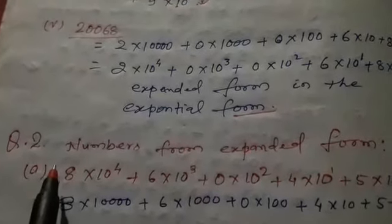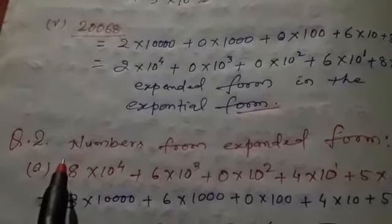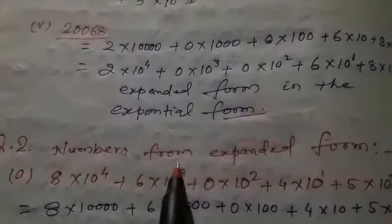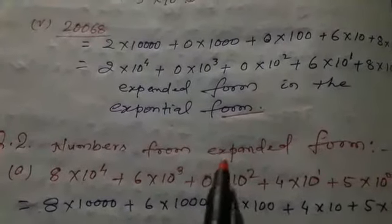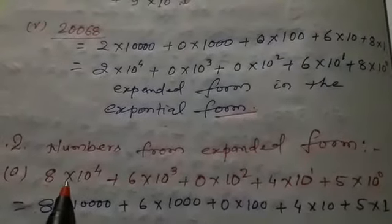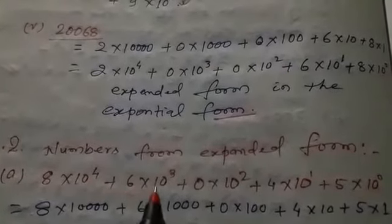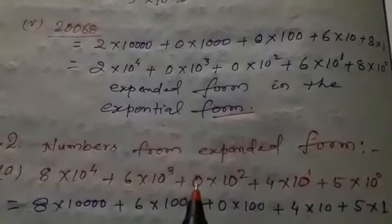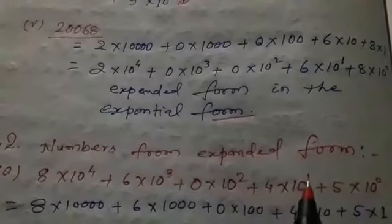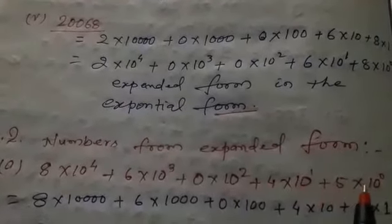Dear students, today I am going to solve Exercise 13.3. It is the second part of this exercise. Question number 2 is numbers from expanded form. The first is 8 × 10 to the power 4 plus 6 × 10 to the power 3 plus 0 × 10 squared plus 4 × 10 to the power 1 plus 5 × 10 to the power 0.